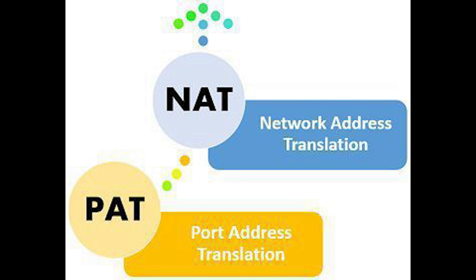PAT, on the other hand, conserves IP addresses by assigning a single public IP to a group of hosts using different port numbers, and lessens security flaws by preventing public addresses from being exposed. However, an internal table can only hold a certain number of entries to track connections, and in most cases the same sort of public service cannot be run on the same IP address.